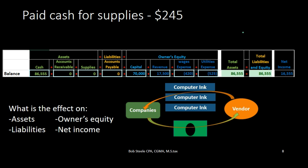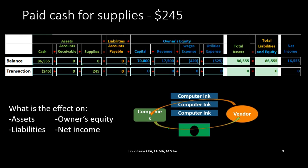Now we're going to record this transaction. Every transaction is going to have at least two accounts that will be impacted, and every transaction will keep the accounting equation in balance. First question: is cash affected? We can see here cash is affected — cash is going away from the company, so cash is going down by 245 in this case.